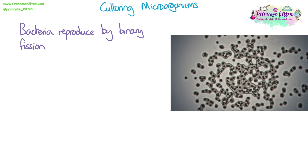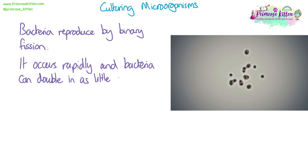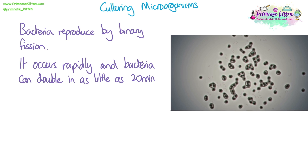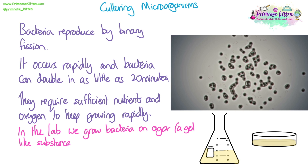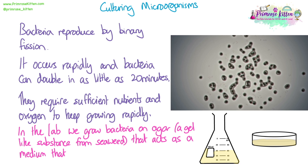Culturing microorganisms. Bacteria reproduce by binary fission. It occurs really rapidly, as you can see in the video, and bacteria can double in as little as 20 minutes if they're given enough oxygen and nutrients. In the lab, we grow bacteria on a medium called agar, which is a gel-like substance extracted from seaweed. It acts as a solid or liquid medium that bacteria can grow in or on, and you can put nutrients in it — such as carbohydrates, nitrates, or other mineral ions — to provide bacteria with what they need to keep dividing and growing.